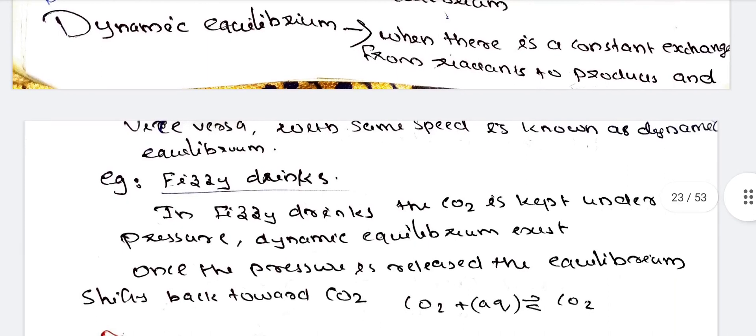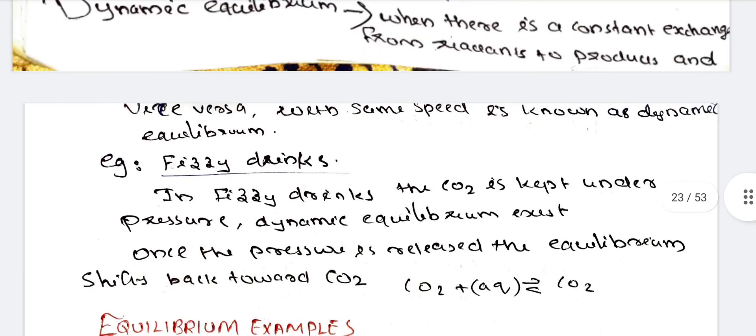What is the example? This example is fizzy drinks. Fizzy drinks is soda bottle. In fizzy drinks, the CO2 is kept under pressure, dynamic equilibria exists. Once the pressure released, the equilibrium shifts backward to CO2. I am saying that it is dynamic equilibria. When we are talking about it, the equilibrium shifts from one side. That is why CO2 is released. That is why we are talking about fizzy drinks.